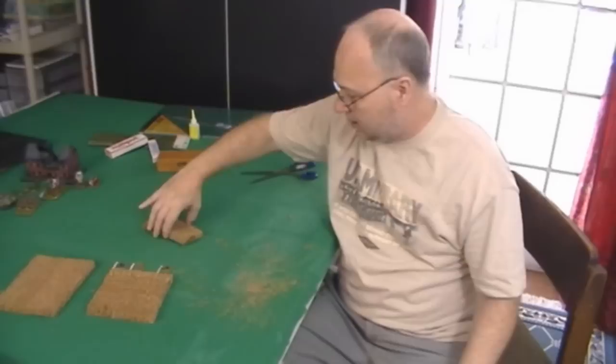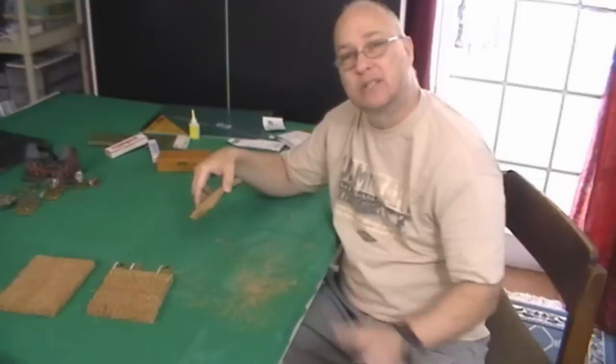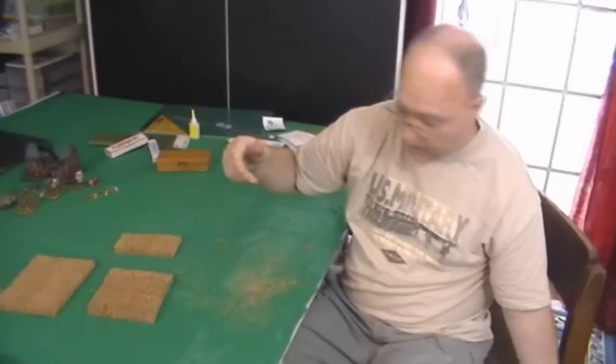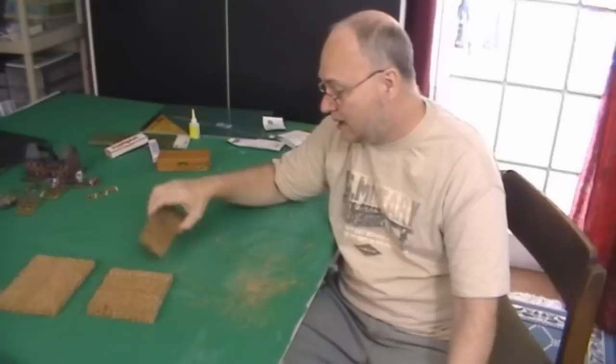So basically you see that this mat - it's about a half inch pile, half inch thickness - this mat works for all scales. You can use it for as small as 6mm figures, they would just be tall crops, and then you can use it all the way up to your 25mm miniatures. And you notice I've only cut about a sixth of it out. So I can get six times as many of these fields. I'd get about 18 of these types of fields out of one mat which is only 10 bucks. That's about 50 cents a field, and that's pretty good in my opinion.